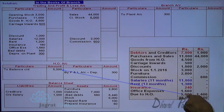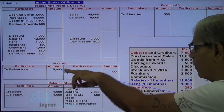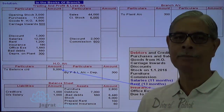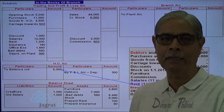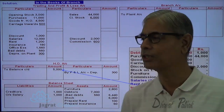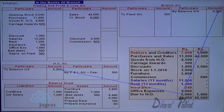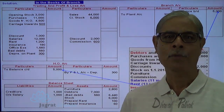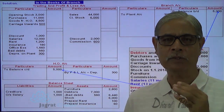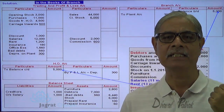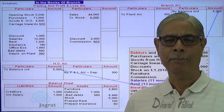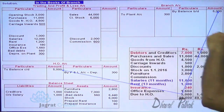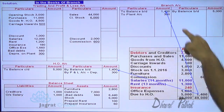Regarding the HO account: the debit balance of 5,000 in the branch books is recorded on the debit side, and 1,400 on the credit side. In the books of HO, the entries are opposite — 5,000 appears as a credit in the branch account in HO's books. This is because when HO says branch is the receiver, branch says HO is the giver. Balances are always opposite: 5,000 debit in branch books means credit in HO books, and 1,400 credit in branch books means debit in HO books.